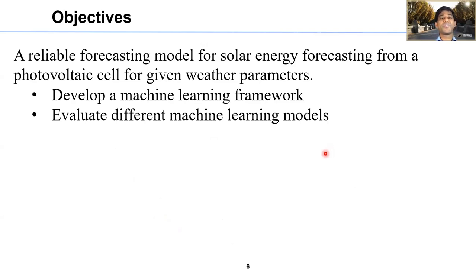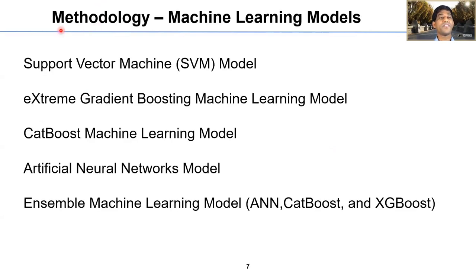The specific objective is to develop a reliable forecasting model for solar energy from a photovoltaic cell for given weather parameters. The uniqueness of this study is the model with all significant weather parameters included. My work is focused on developing a machine learning framework for short-term and long-term forecasting of solar power. I have considered support vector machine, extreme gradient boosting (XGBoost), CatBoost, artificial neural networks (ANN), and ensemble machine learning models in this study.